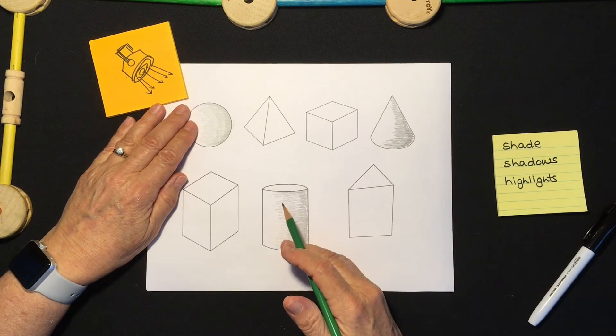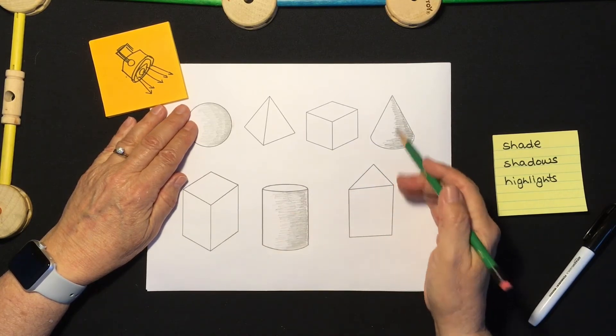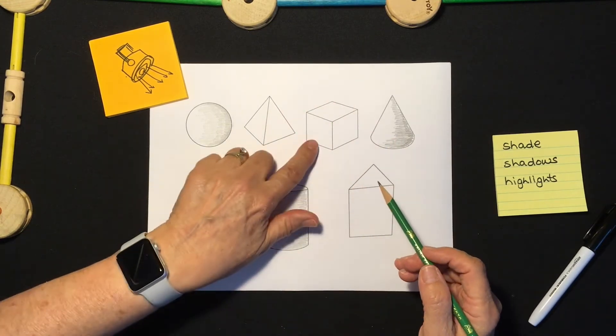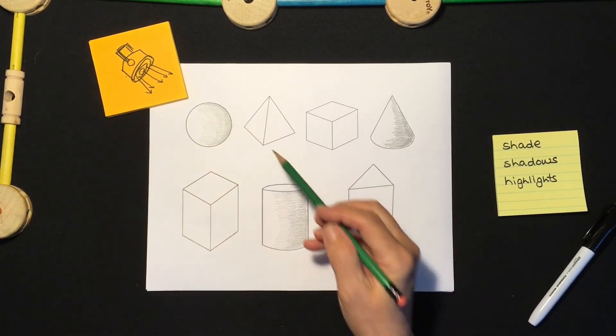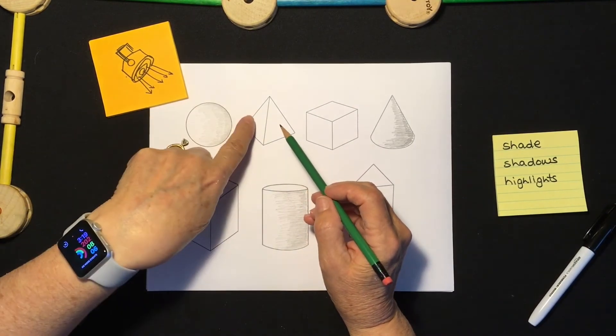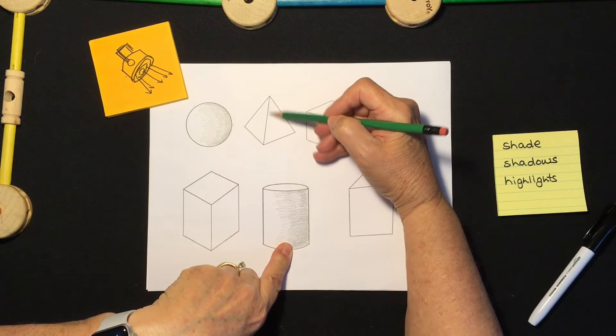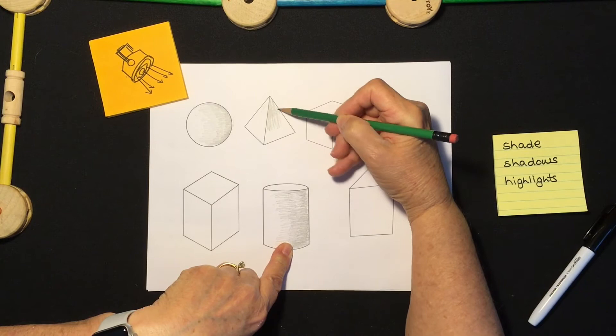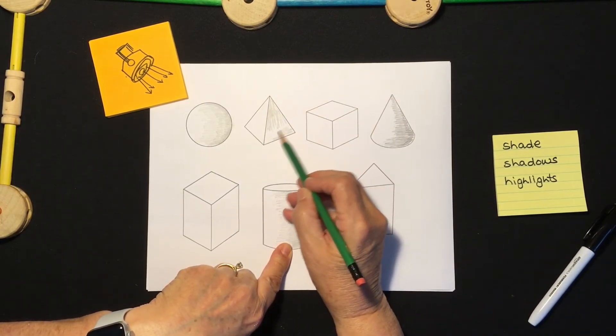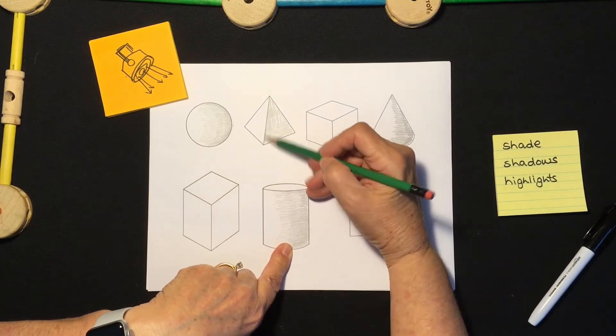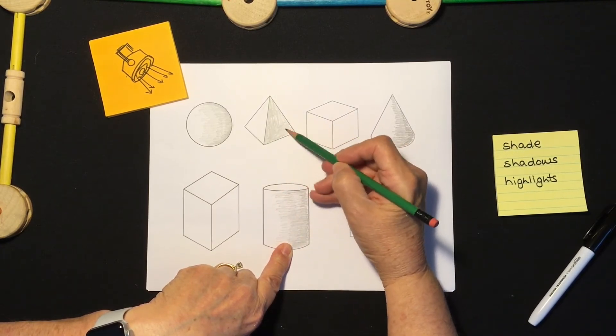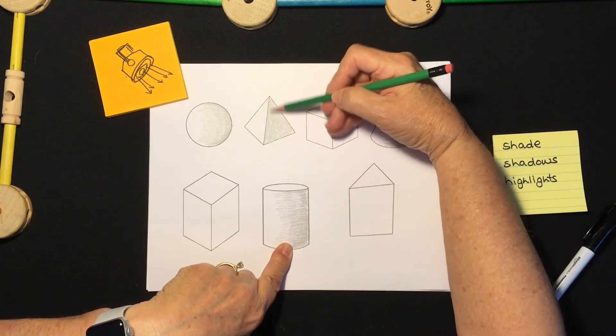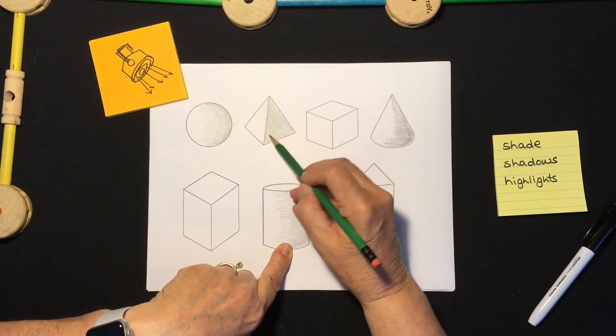So I've done my three shapes or forms that have curves, and now I'm going to talk about these four. So I'll go ahead and start with the cube first, and I'll start with this shape here. And the full light is hitting this side, so it's going to be very light. So really, you're only going to be shading this side. This is where the shadow is right here. This is the back side of that shape. I keep calling it a shape. We need to remember that shapes are two-dimensional. Forms are three-dimensional. These are forms. And they're very geometric as well.